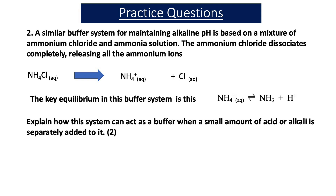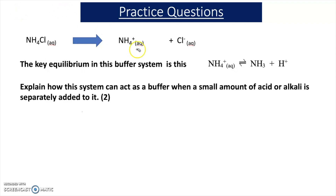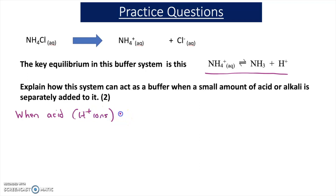The final practice question involves a different buffer system using a weak base and a salt of the weak base. We have ammonia (NH₃) and ammonium chloride — ammonium chloride is made from ammonia, a weak base, and hydrochloric acid, a strong acid. The key equilibrium here is NH₄⁺ splitting into NH₃ and H⁺. The question asks you to explain how this system acts as a buffer when a small amount of acid or alkali is added — a two-mark question.